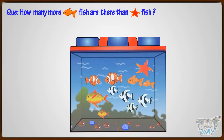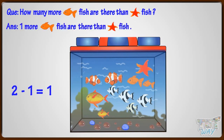How many more orange fish are there than starfish? There are two orange fish and one starfish. Two minus one equals one. So one more orange fish is there than starfish.